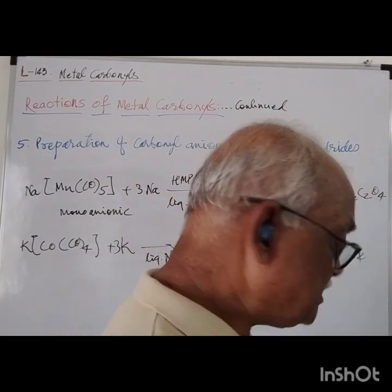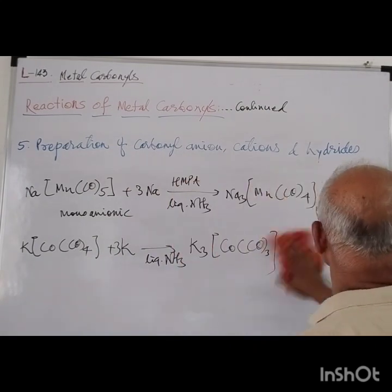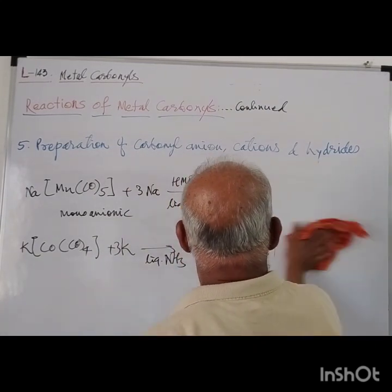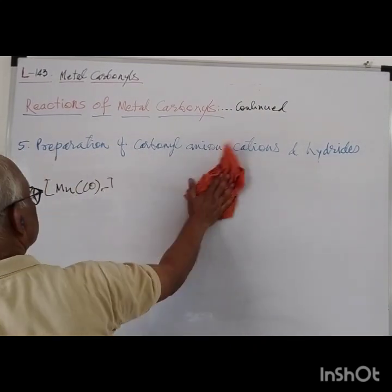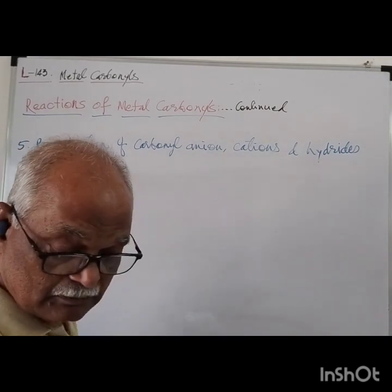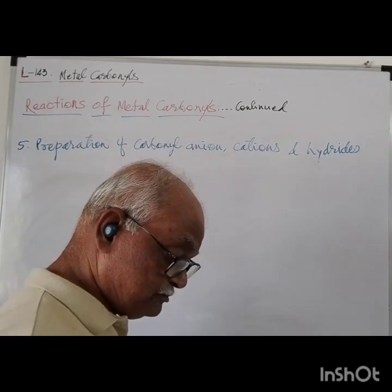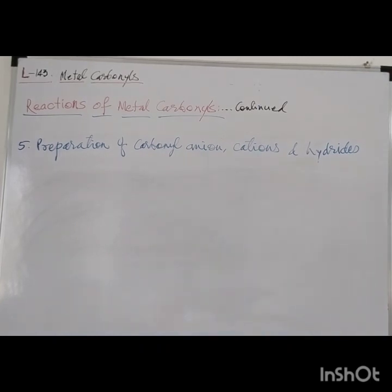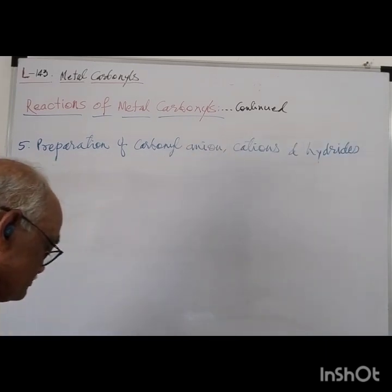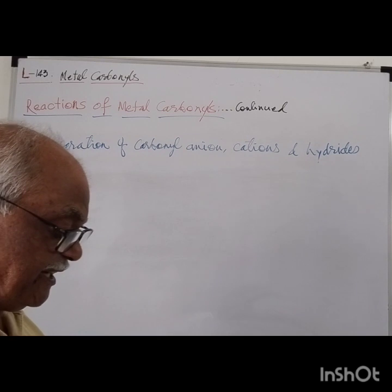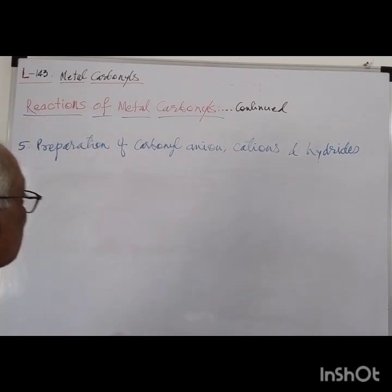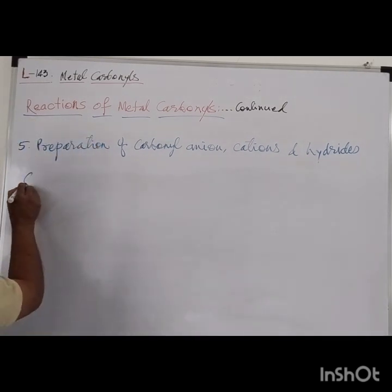Another example: K[Co(CO)₄] plus K in presence of liquid ammonia gives K₃[Co(CO)₃] plus 1.5 K₂C₂O₄. Here also the monoanionic species is reduced to a trianionic species. So this is the formation of anionic carbonyl species.